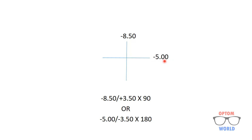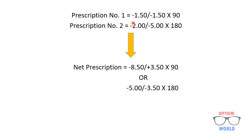From this net optical cross: if we consider minus eight point five zero as the sphere, we are moving towards less negative, so the cylinder sign is positive. The difference between the two is three point five zero, so the cylinder is plus three point five zero at axis 90. If instead we take minus five as the sphere, we move towards more negative, so the cylinder is minus three point five zero at axis 180. The combined net prescription is minus eight point five zero with plus three point five zero cylinder at 90, or minus five sphere with minus three point five zero cylinder at 180.